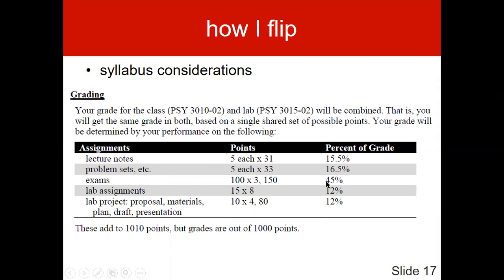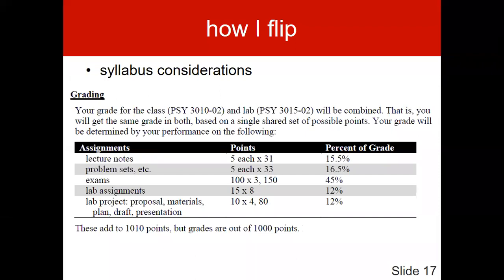There are four exams worth 45%, which is a relatively low amount. There's also a lab combined in for the four credits for the class, so one quarter of the points are for the lab. For the lecture part only: 30% is notes and problem sets, 45% is exams. You really have to do these notes and problem sets to do well in the class — this isn't a class where you can just take the exams and pass. You would fail miserably if you do that.